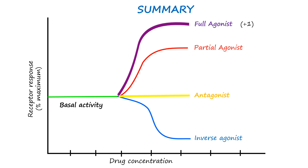An antagonist does not change the receptor response from its baseline. These drugs bind to the receptor and block other agonists from binding, but do not alter the receptor's constitutive or baseline activity. They have an efficacy of zero. Inverse agonists have an efficacy of negative one — they bind to the receptor and decrease its activity below baseline, producing the opposite effect of a full agonist. Drugs can have varying levels of efficacy falling anywhere on the spectrum between full agonist and inverse agonist.